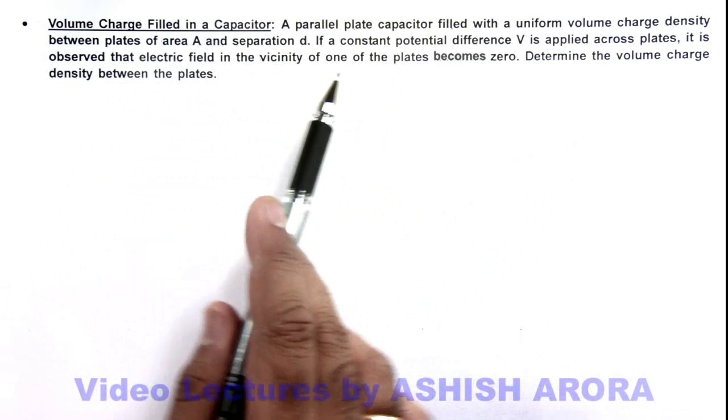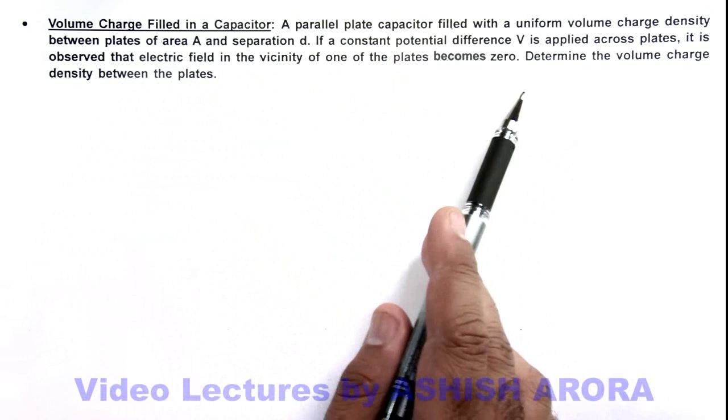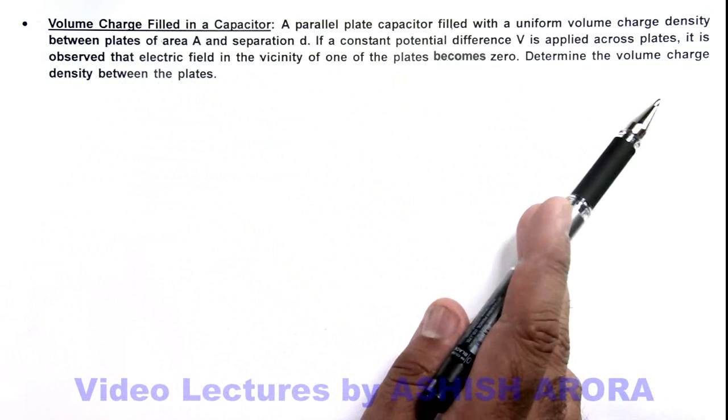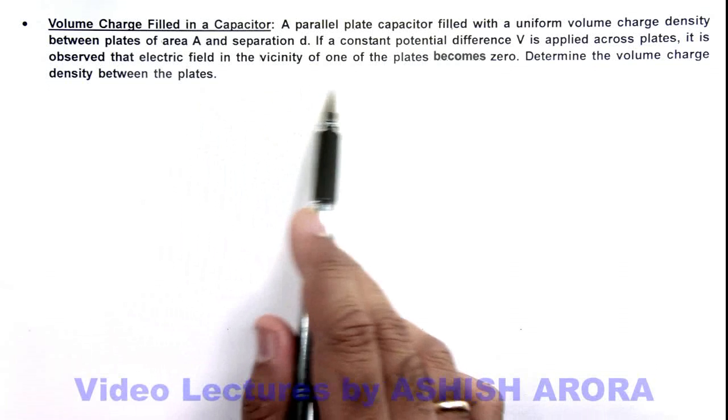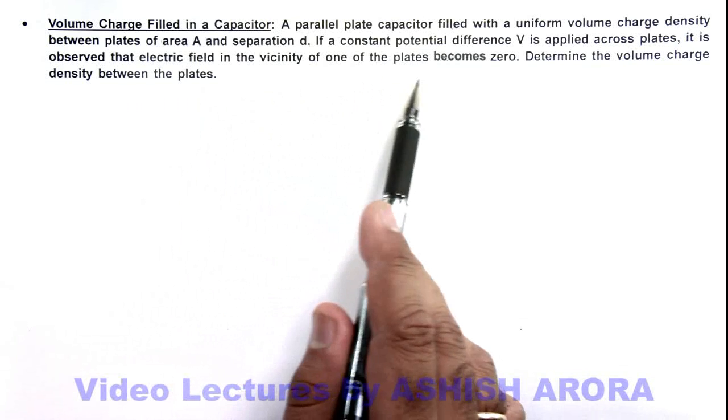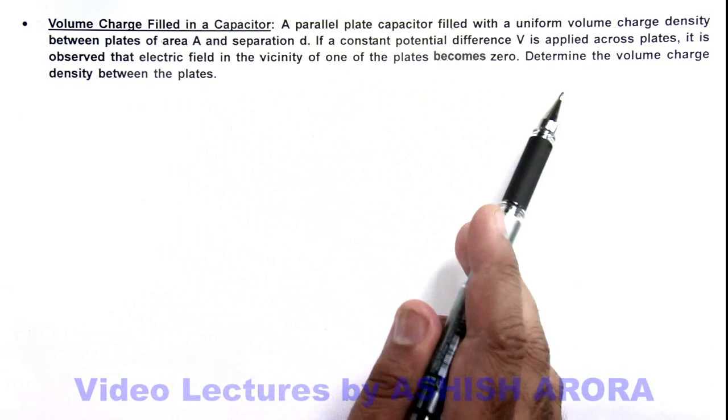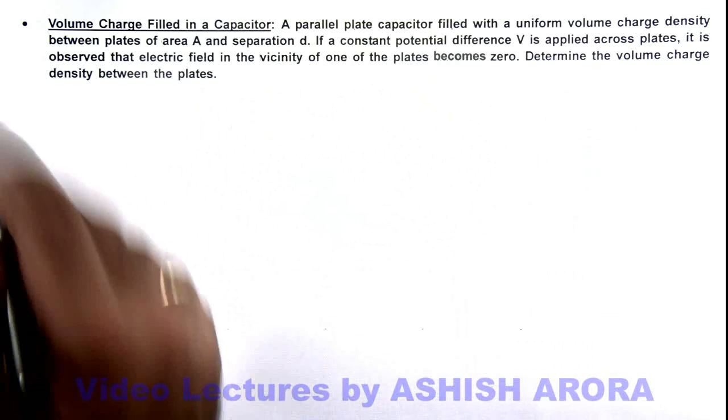If a constant potential difference V is applied across the plates, it is observed that the electric field in the vicinity of one of the plates becomes zero. We are required to determine the volume charge density between the plates.